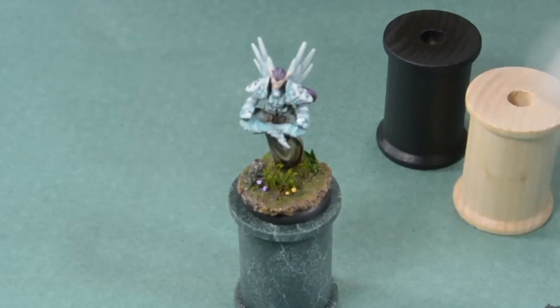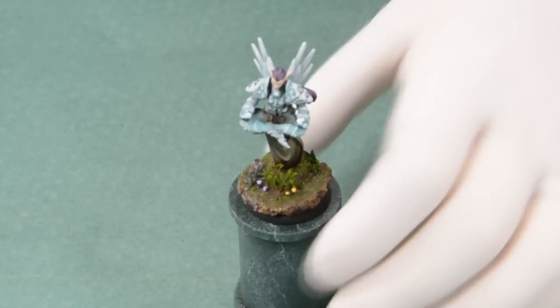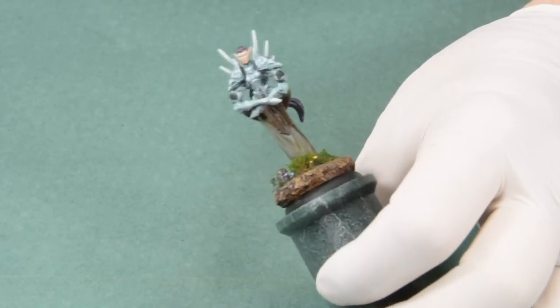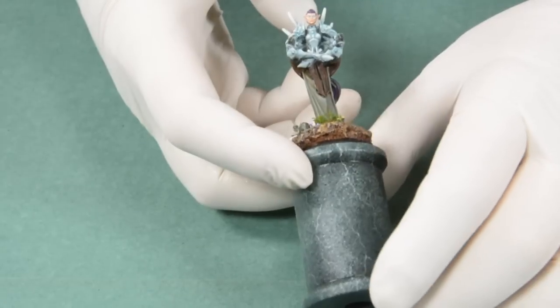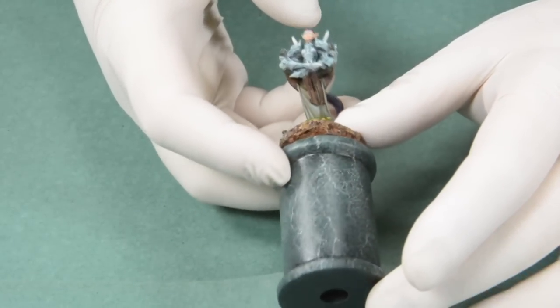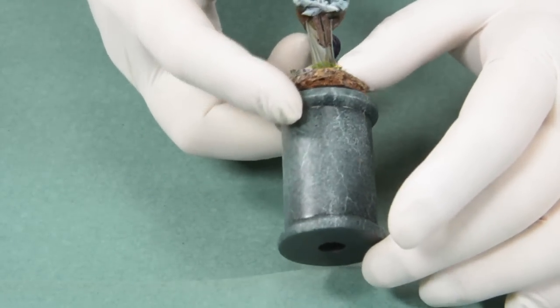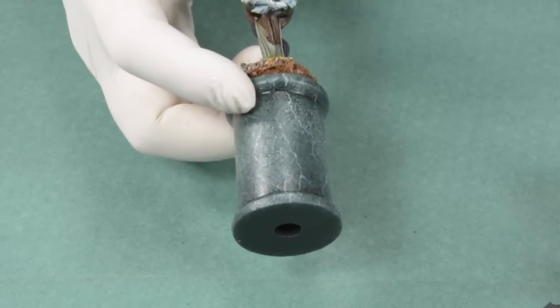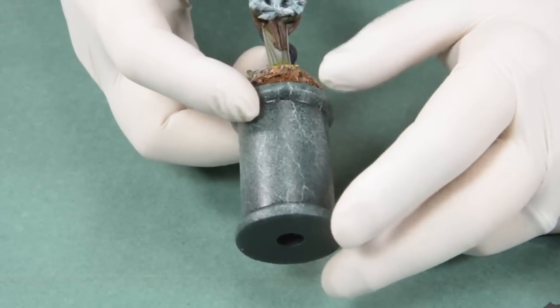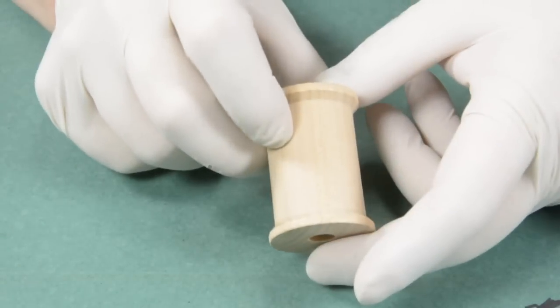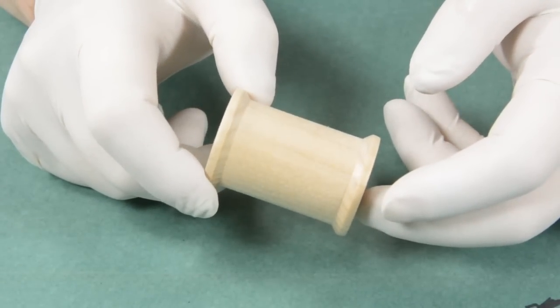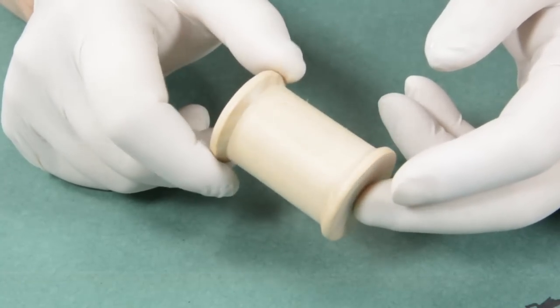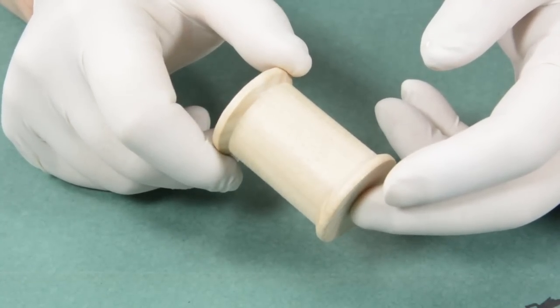Hey everybody! I recently painted this Assyria for War Machine and I got a number of questions about how I did the base. This is really just a faux marble painting over a wooden dowel. So I'm going to go through real quick how I did it and hopefully you'll be able to follow along and duplicate the process for yourself.